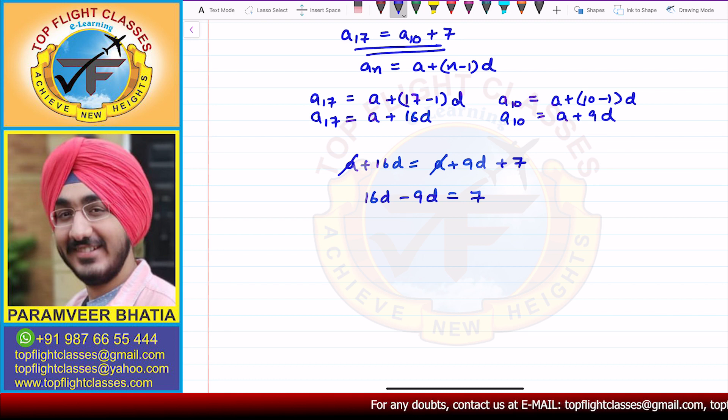From here, what I get is 7d equals 7. So d comes out to be equal to 1.